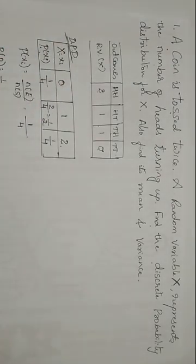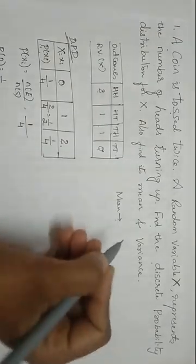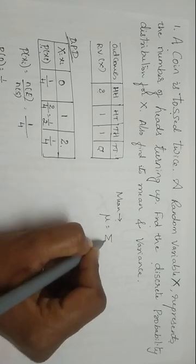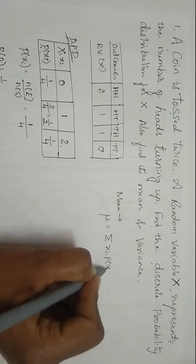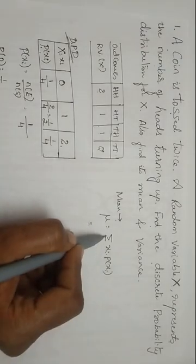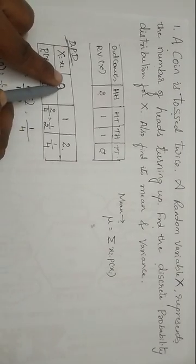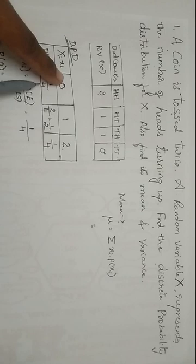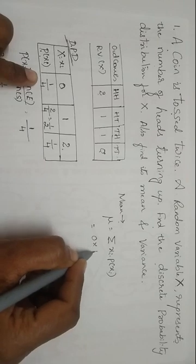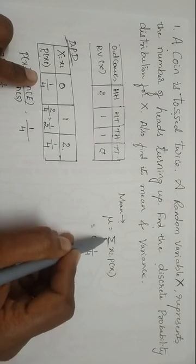Next, they are asking about the mean. We have already discussed about the formula for mean. The formula for mean is mu is equal to summation XI into P of XI. So which is equal to this summation means we have to add up. Here, XI, let us take it as XI as 0. For this XI, this is the corresponding P of XI.